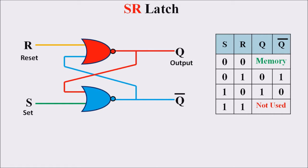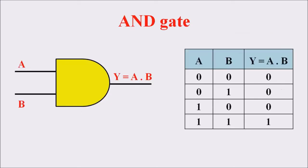The truth table for this SR Latch is as follows: S=0, R=0 results in the memory condition; S=0, R=1 results in Q=0; S=1, R=0 results in Q=1; and the S=1, R=1 condition is invalid, so this condition is not used in an SR Latch with NOR gates.